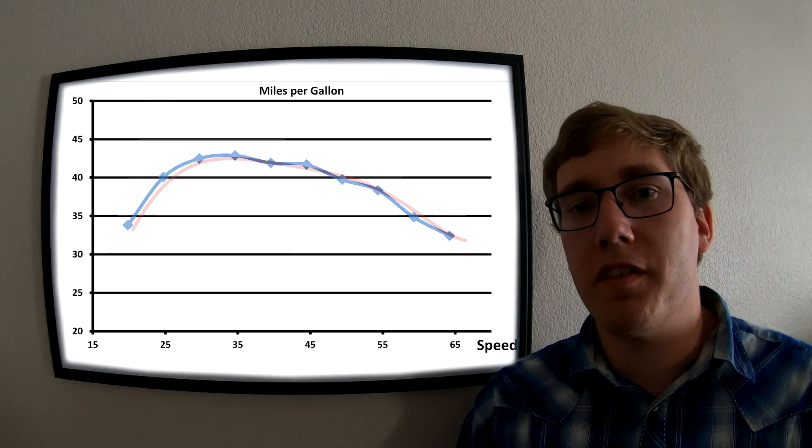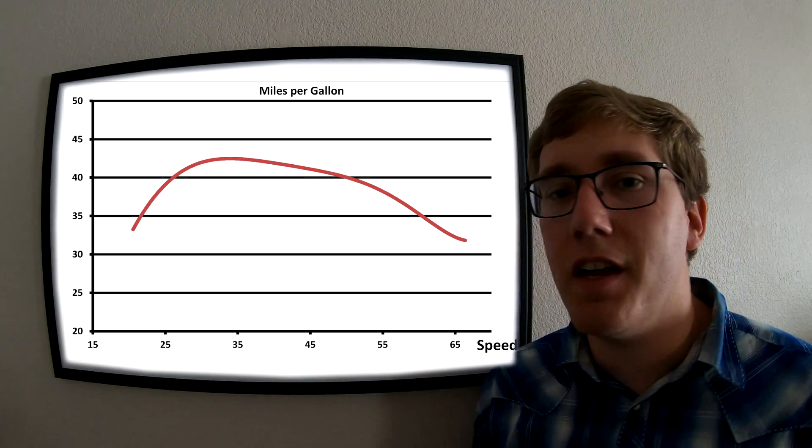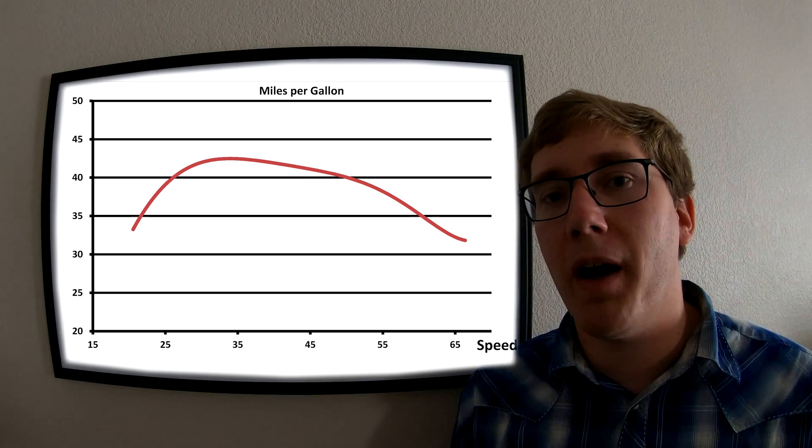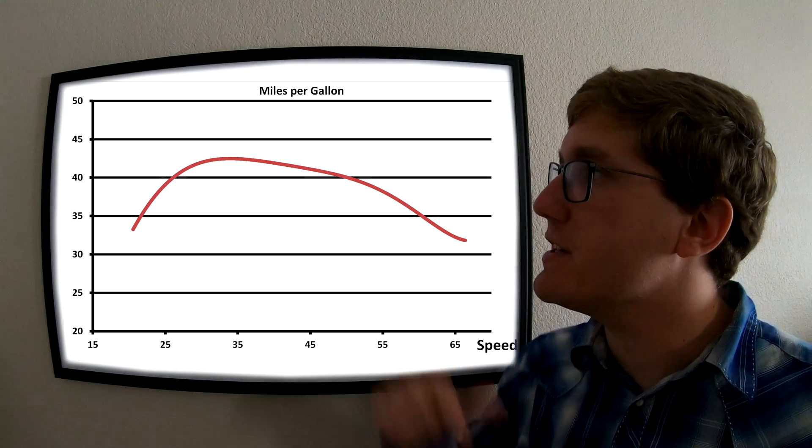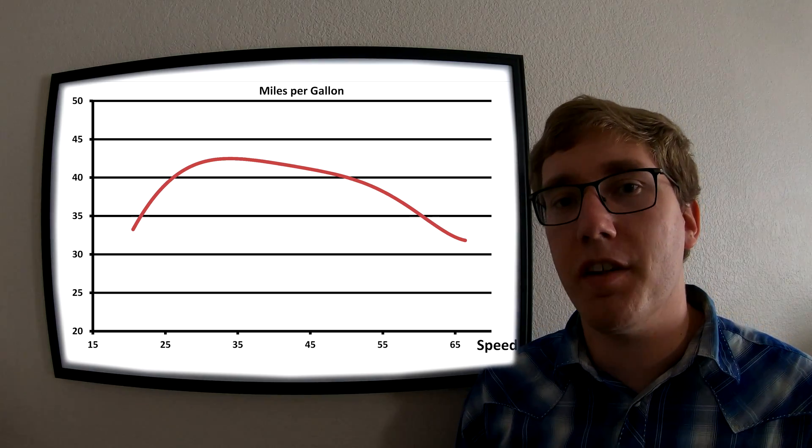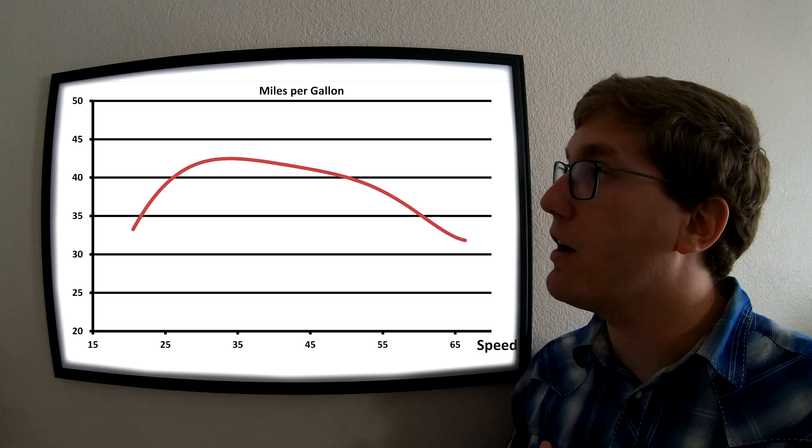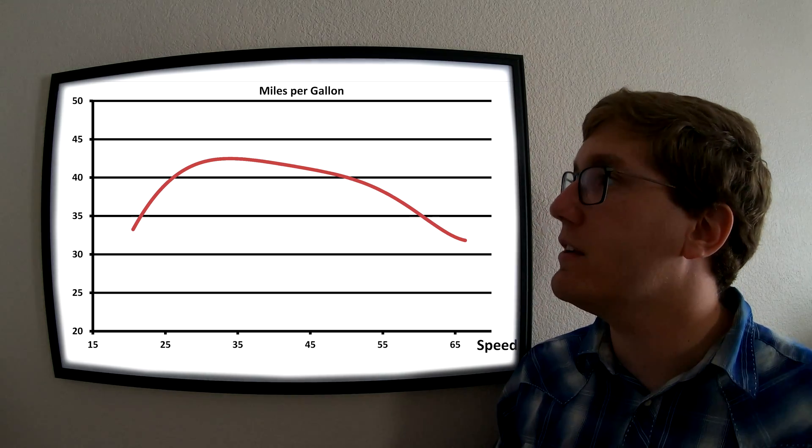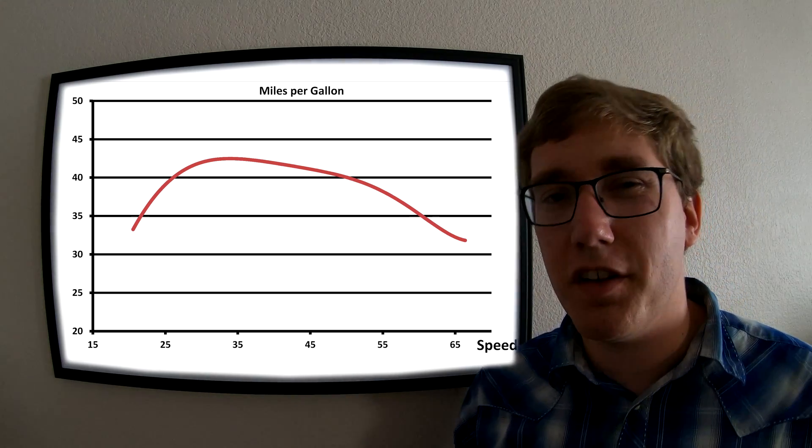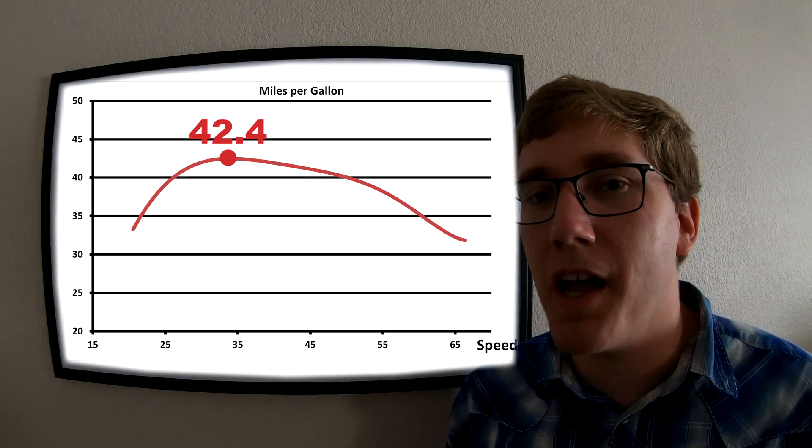I took these results and performed a polynomial curve fit to get a smoother curve to represent the data, and I applied a small bias factor to bring down the actual MPG based on what I've seen previously at the pump. The results show the actual peak is right around 33 miles per hour at 42.4 miles per gallon.